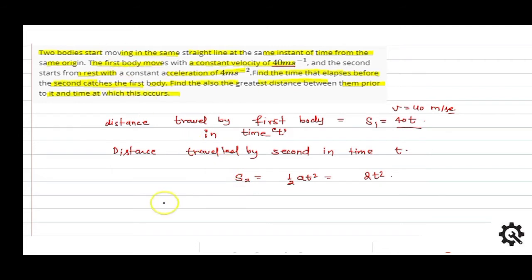S1 minus S2 equals 0, so we get 40t minus 2t squared equals 0. Taking t common, 40 minus 2t equals 0, so t equals 0 and t equals 20 seconds. T equals 0 is when both bodies start, and t equals 20 seconds is when they meet.